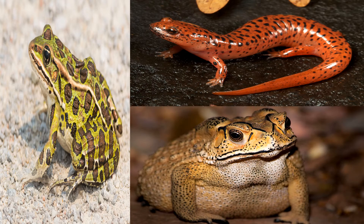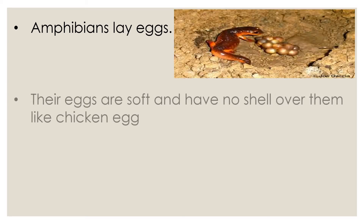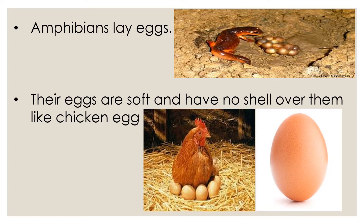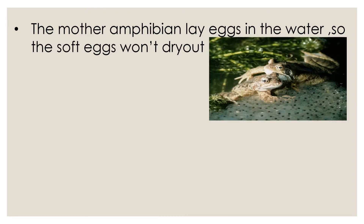Salamander. Amphibians lay eggs. The eggs are soft and have no shell over them like a chicken egg. The mother amphibian lays eggs in the water so the soft eggs won't dry out.